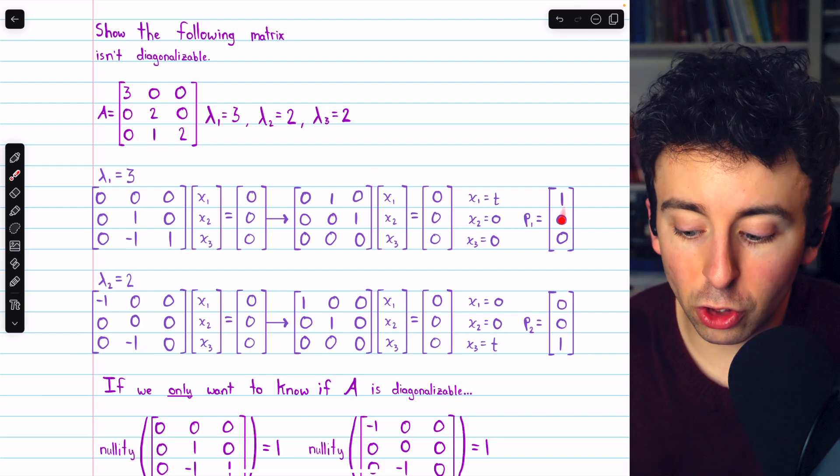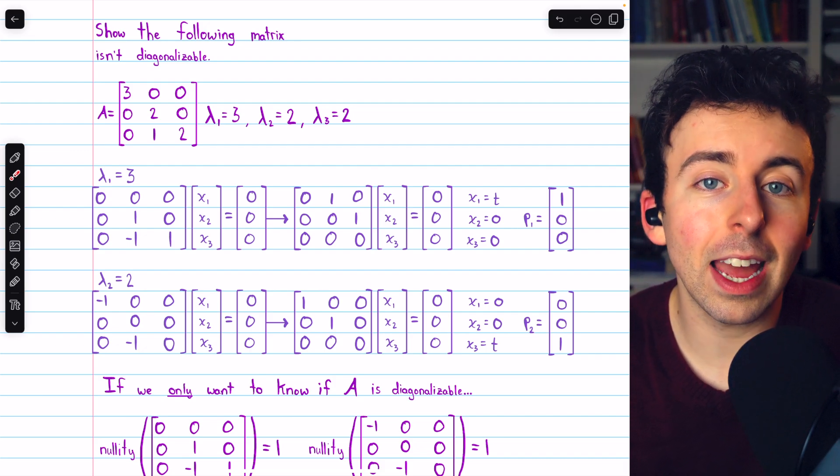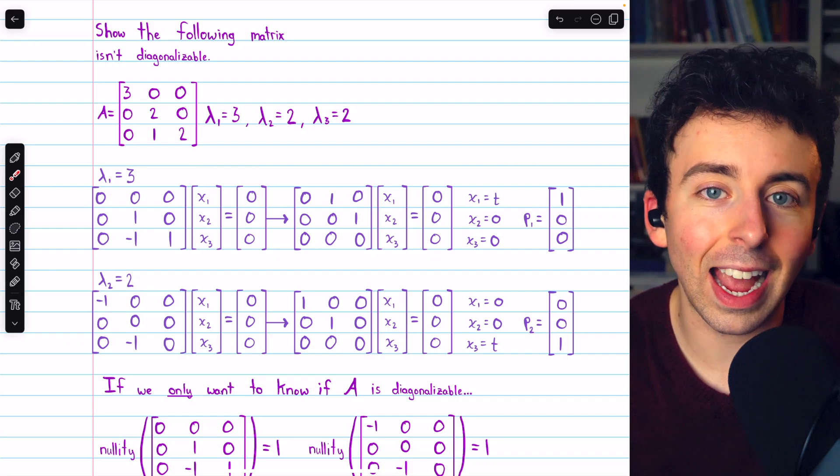We see there are only two linearly independent eigenvectors, and so again we can conclude that the matrix isn't diagonalizable.